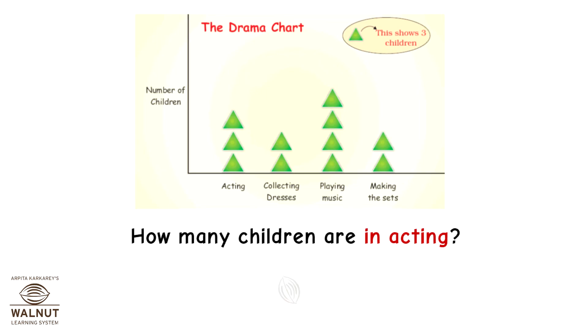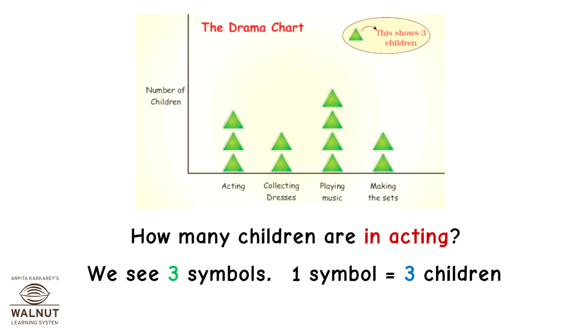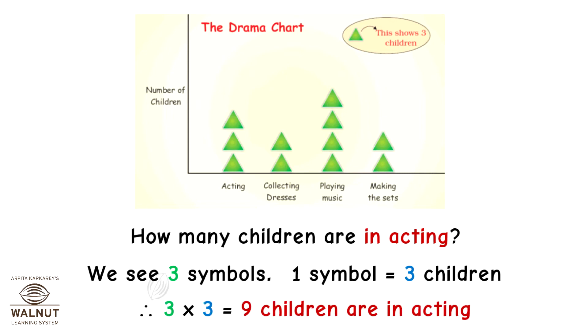How many children are in acting? We see three symbols; one symbol is equal to three children, so 3 into 3 which is equal to nine children are in acting.